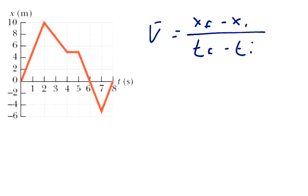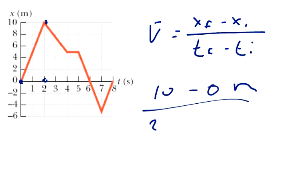The first one says between zero and two seconds. So from zero seconds to two seconds, I ended right there. And so x-final is ten minus zero, and these are meters, over two minus zero seconds. And it equals five meters per second. So that's the first answer: five meters per second.